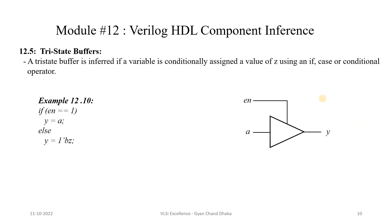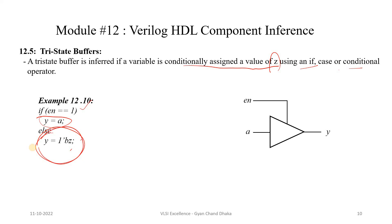Now let's see the next type of component: tri-state buffers. A tri-state buffer is inferred if a variable is conditionally assigned a value of Z (high impedance) using an if, case, or conditional operator. For example, if enable is high, y gets value a; otherwise y gets Z (high impedance). When a high-impedance value is assigned using a conditional statement, this RTL code infers a tri-state buffer — whenever enable is high, y gets a; otherwise y is in the high-impedance state.